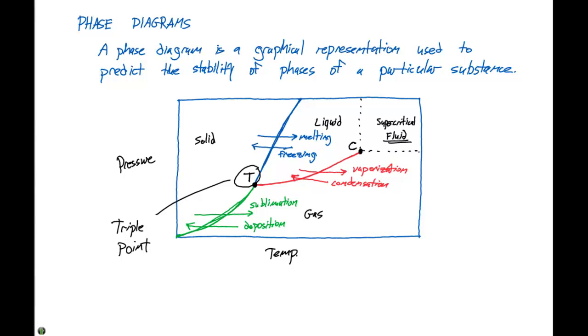And this is the point at which we have equilibrium between all three phases. So any other point on the graph, we have potentially, or any other slope, we have an equilibrium between two phases. But here, the triple point, we have an equilibrium where our substance exists in equilibrium of all three phases.